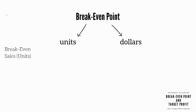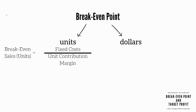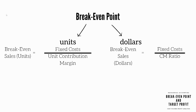The break-even point in sales units is determined by taking fixed costs divided by unit contribution margin. The break-even point in sales dollars is determined by taking fixed costs divided by contribution margin ratio.